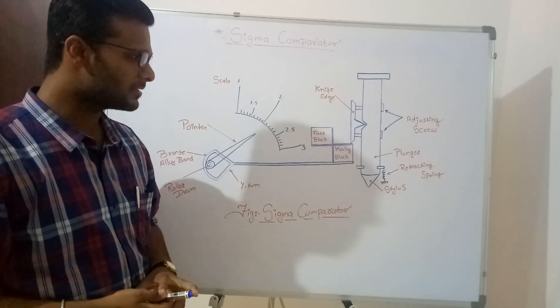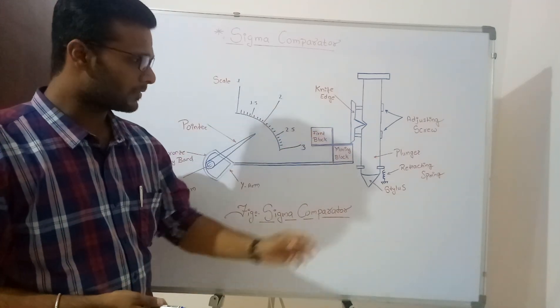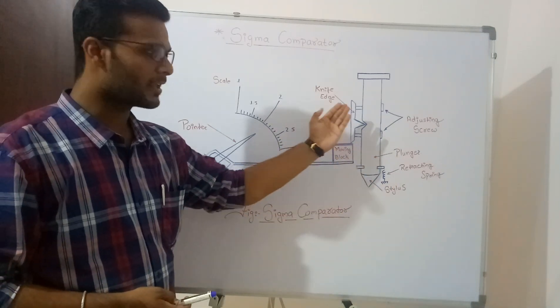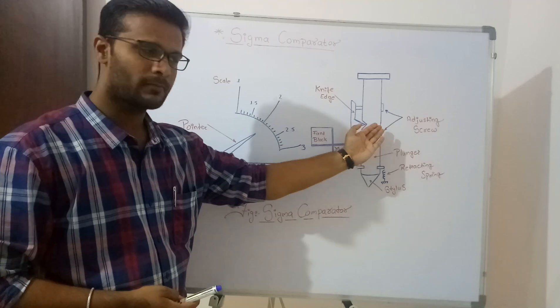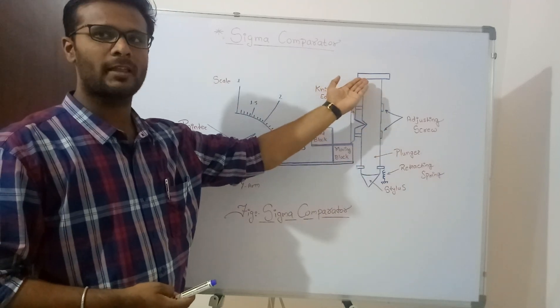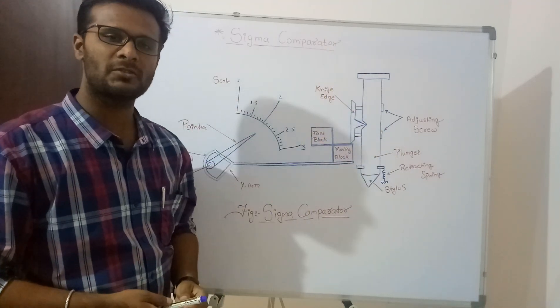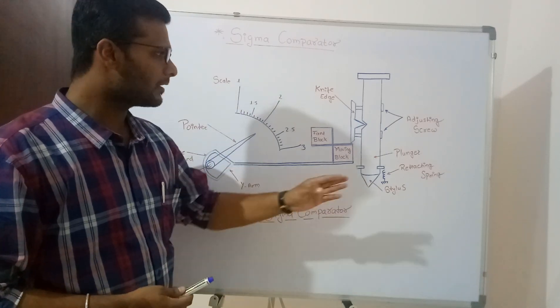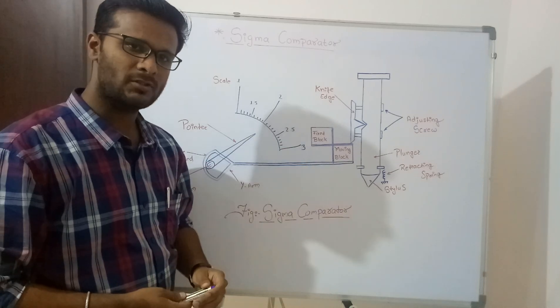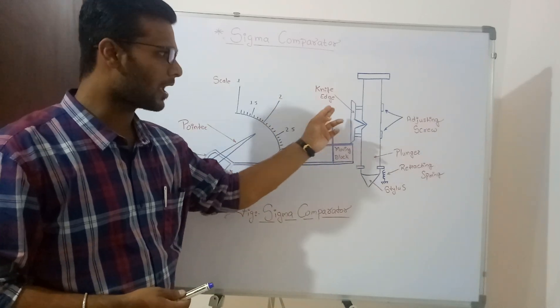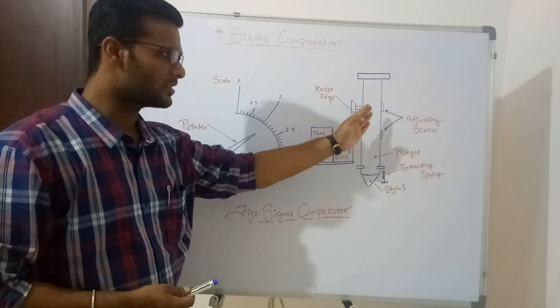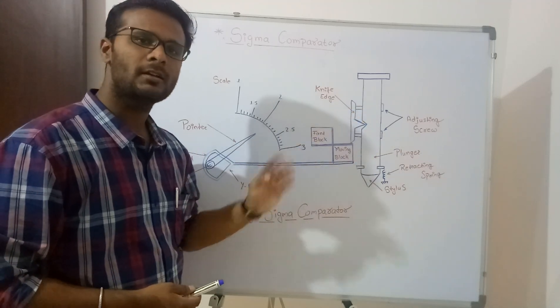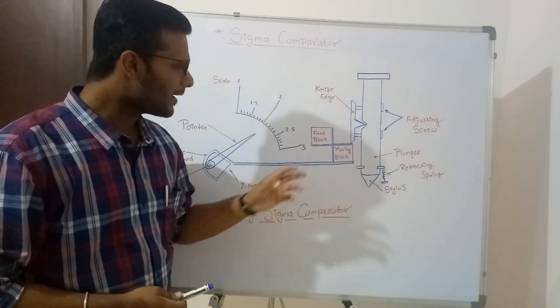First of all we will see construction of Sigma Comparator. It comprises of a plunger, a stylus, retracting spring. After retracting spring it has arrangement for adjusting screws. Above there is a diaphragm. In some cases the diaphragm is not provided directly, a spring is provided, and adjusting screw is there. After that we are having over here a knife edge through that knife edge we are having adjusting screws which can be adjusted.